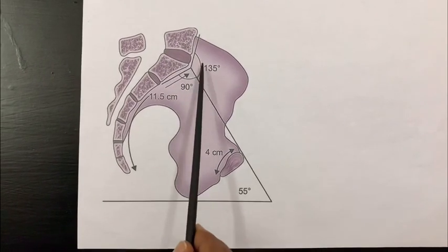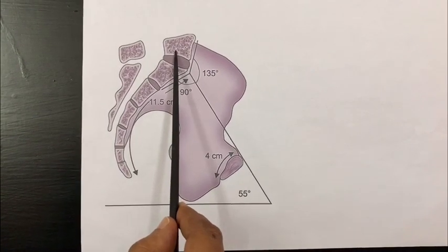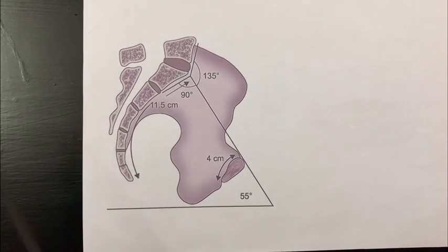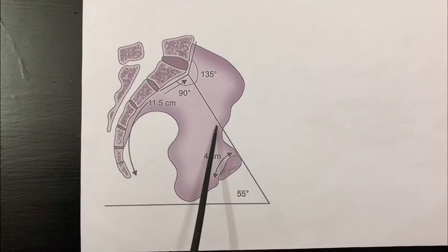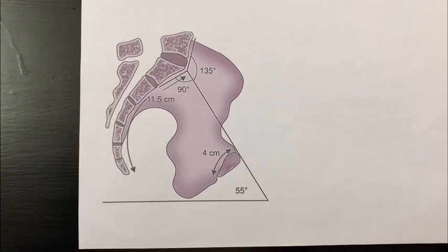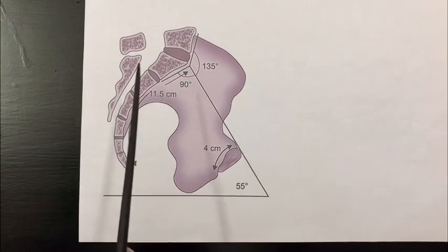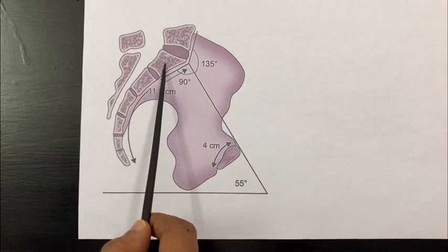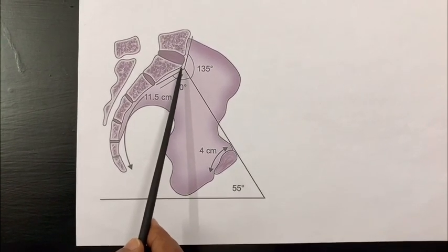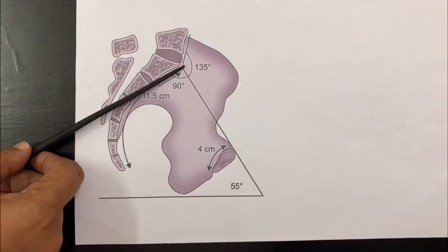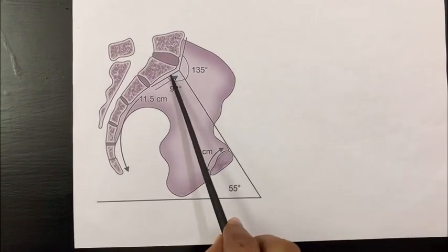In conditions where this angle increases, such as in sacralization of the 5th lumbar vertebra, it is called a high assimilation pelvis. In a high assimilation pelvis, the uterine axis does not coincide with the axis of the pelvic inlet, resulting in delay in engagement and occipitoposterior position. A low assimilation pelvis, seen in lumbarization of the 1st sacral vertebra, is of no obstetric significance. The sacral angle is formed by a line through the front of the 1st sacral vertebra and the plane of inlet, which is 90 degrees.